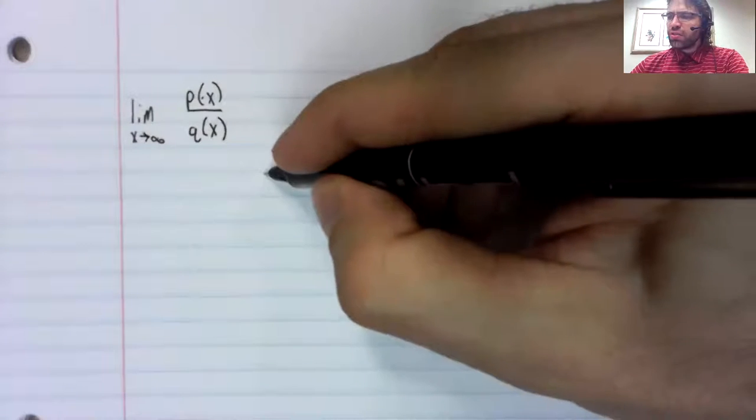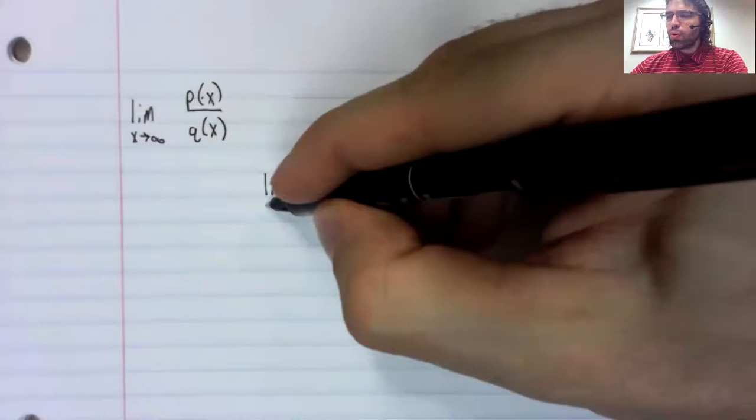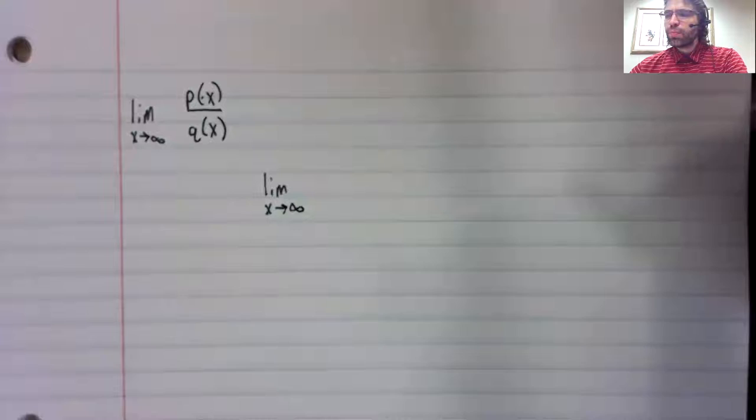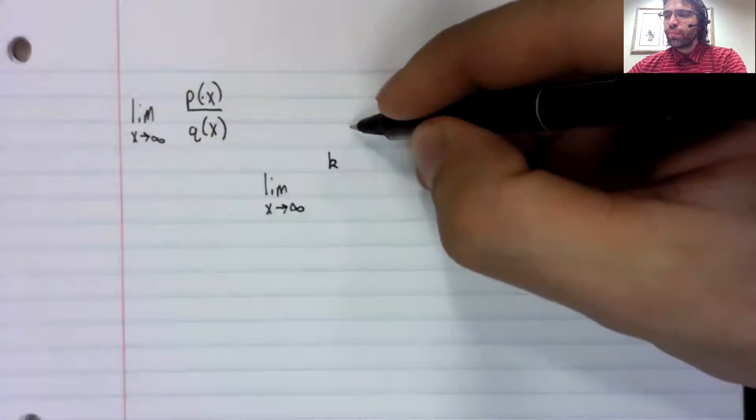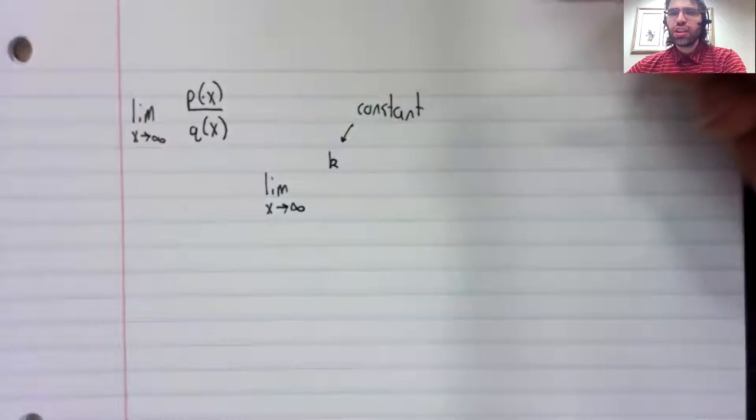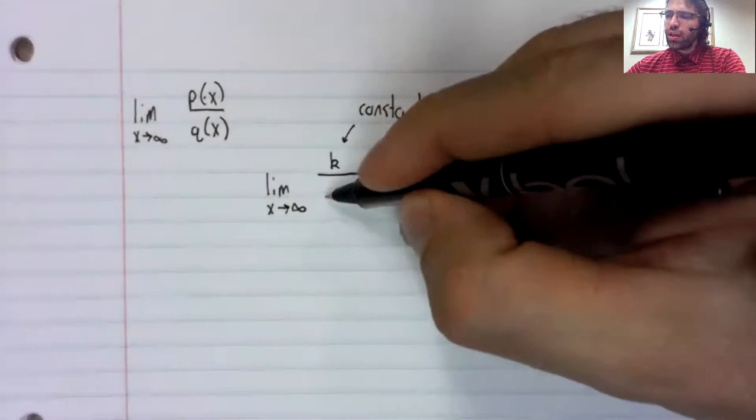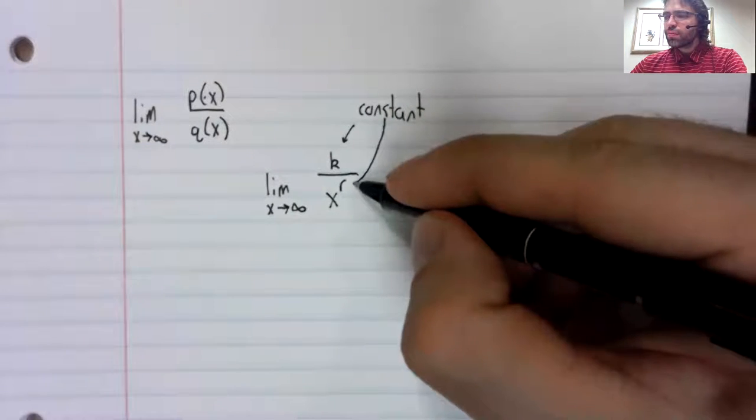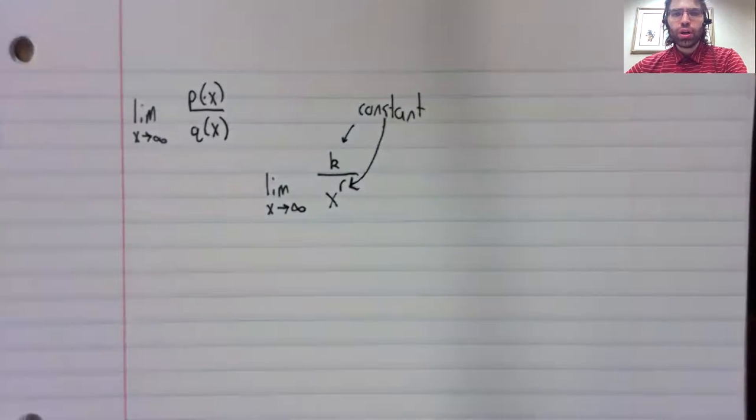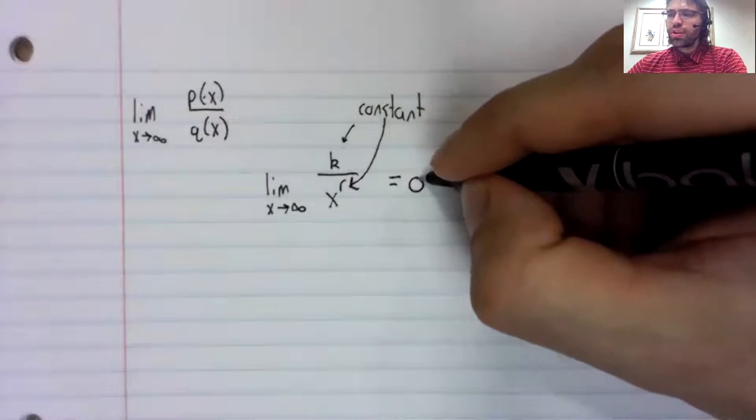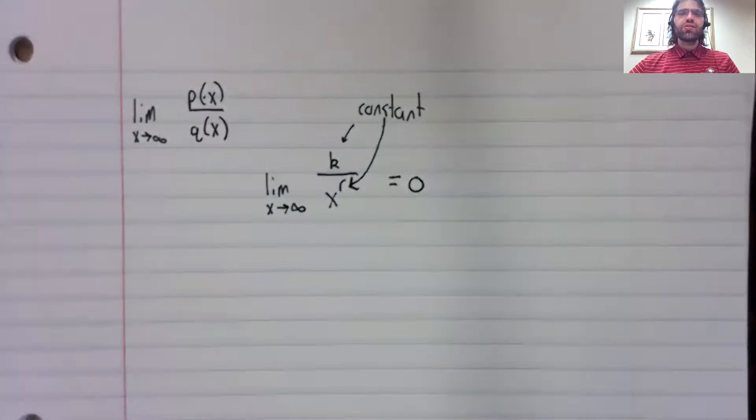First, to state the mathematical fact our trick is based on, if we've got a limit as x approaches infinity of some constant k divided by x raised to another constant, this limit is zero.